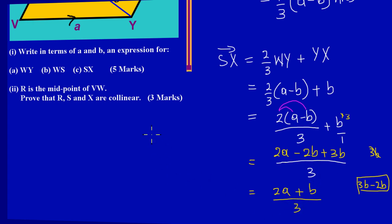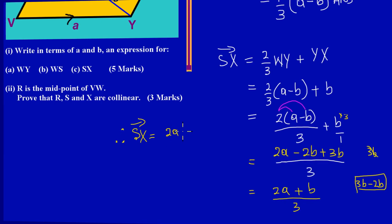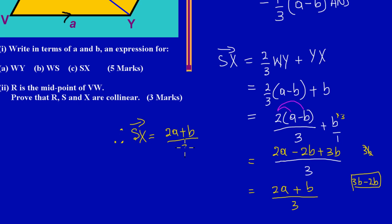Therefore, an expression that represents the distance S to X would be (2a + b) over 3. Or if you want to simplify it more, since 3 is dividing the expression at the top, we could say it's one-third of (2a + b). That's your answer - it's really that easy.